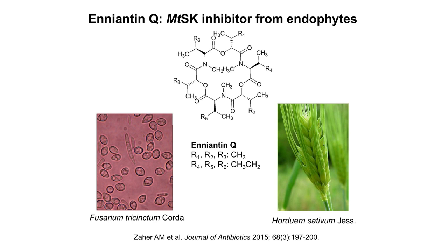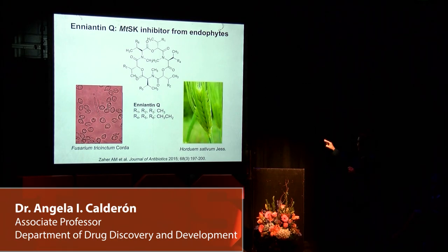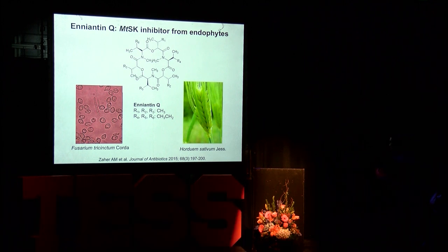When a compound is new, we isolate it and establish its structure. Here we have a polyketide called amiantineCQ, which inhibits Mycobacterium shikimic kinase. It was isolated from an endophyte that grows in a grass called Hordeum sativum, collected in Egypt. We established a collaboration with a group in that country to identify this polyketide.